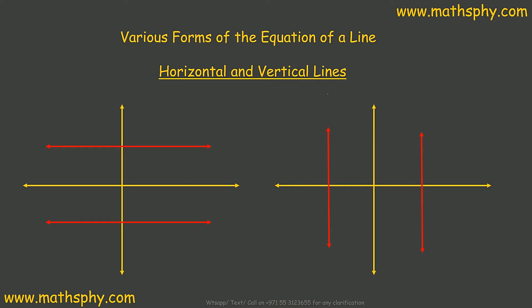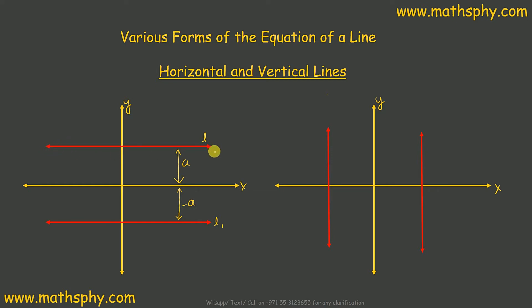Let's start with horizontal and vertical lines. This is the x-axis and this is the y-axis. These two red lines are horizontal lines — one above the x-axis and one below. This horizontal line, let's call it l, is at a distance a from the x-axis. For all x-values, whether positive or negative, the y-value will always be a.